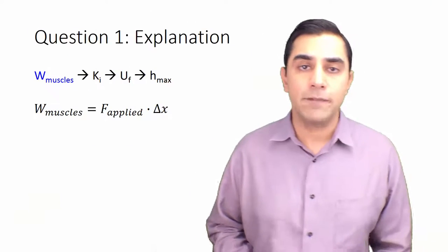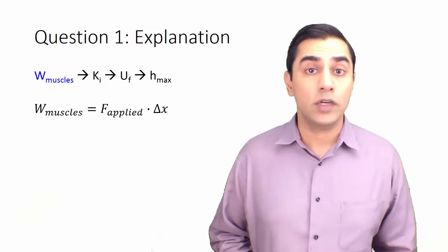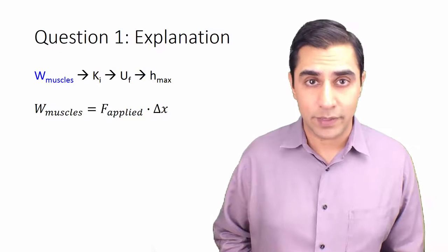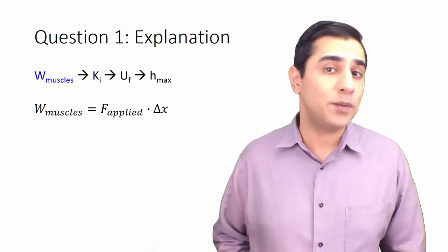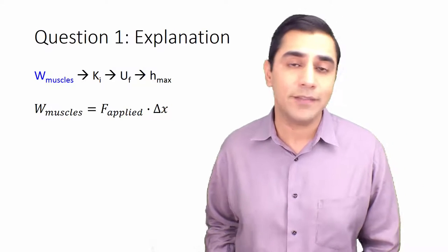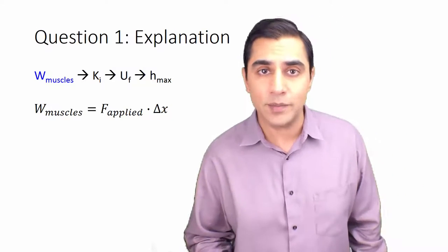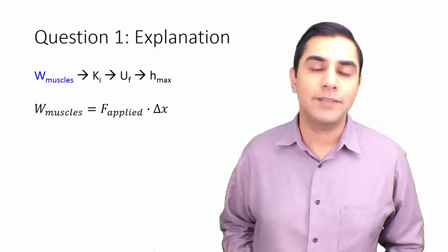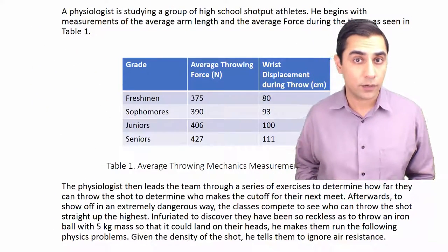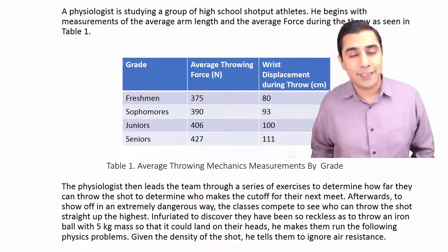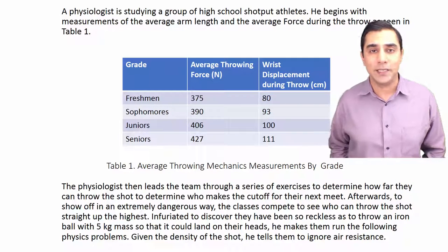So let's start with the first concept in the logical chain: the work done by the muscles. In order to get the work done by the muscles, we apply the formula force times distance. Since they're collinear, the cosine of theta is simply one. Because this is an average junior, we look up that line in table one, which gives us the force during the throw and the wrist displacement during the throw, because that's going to be the displacement of the shot.